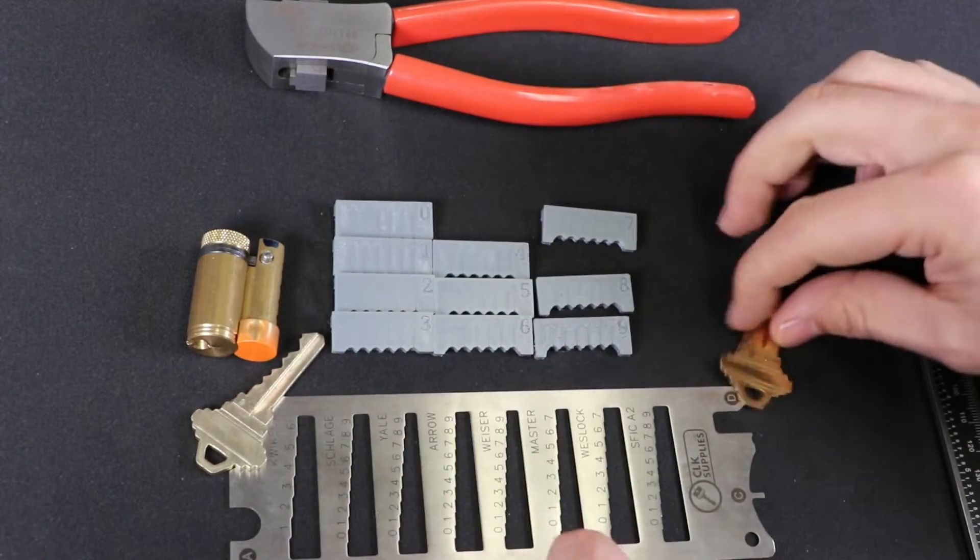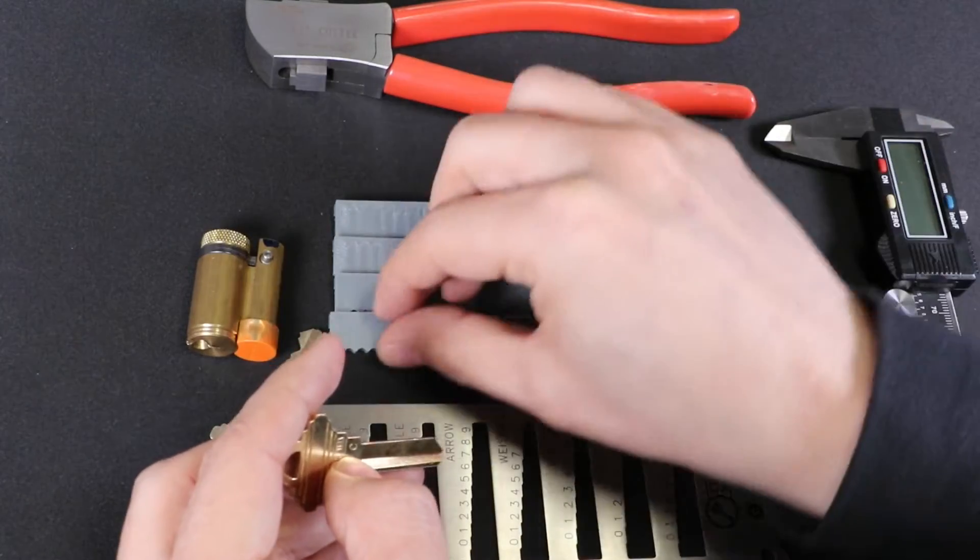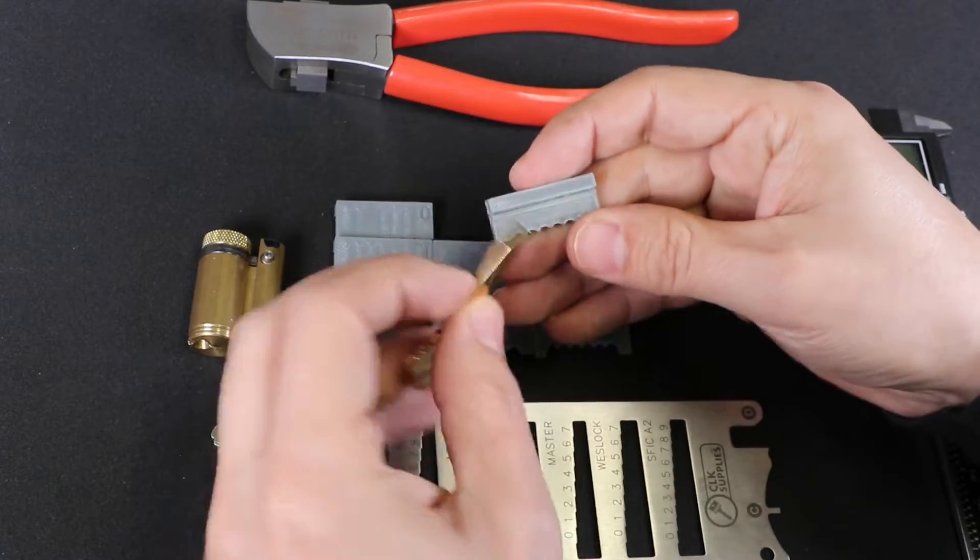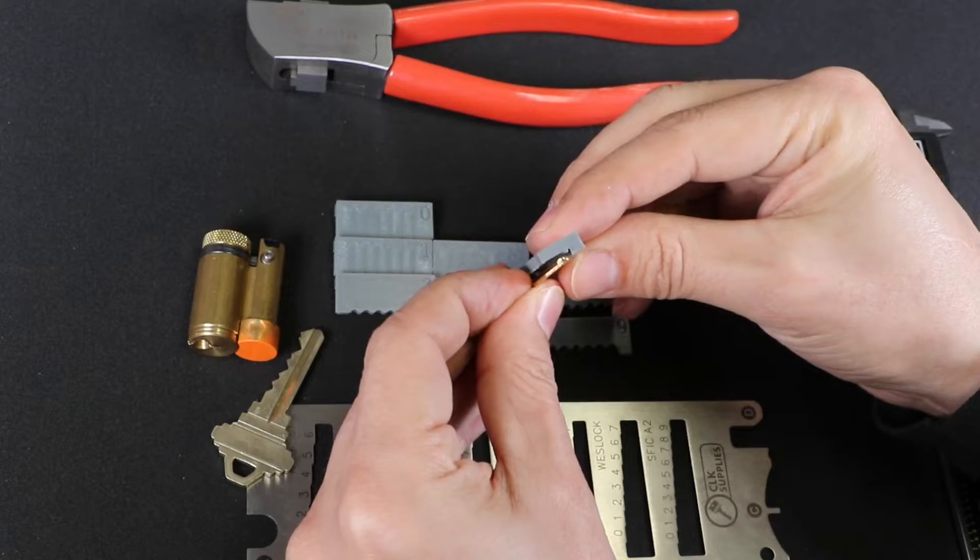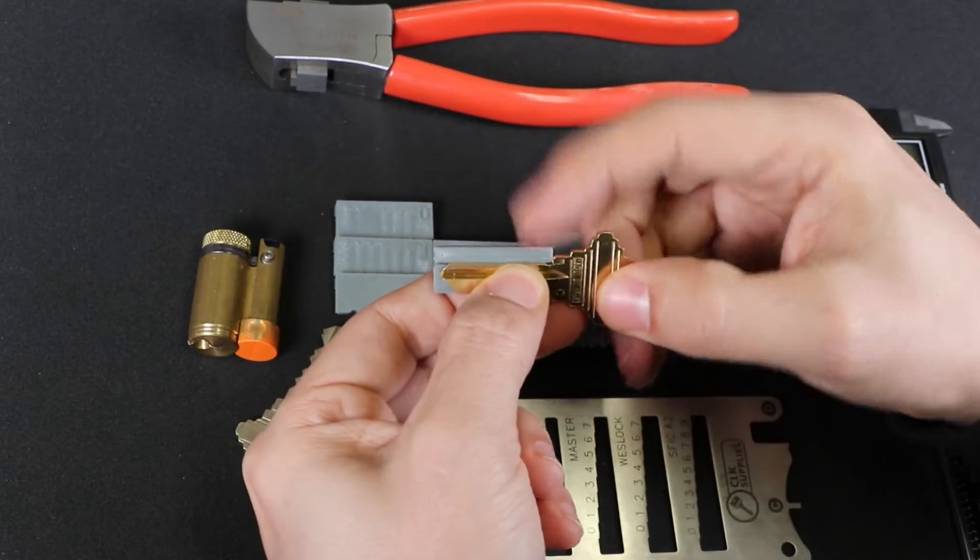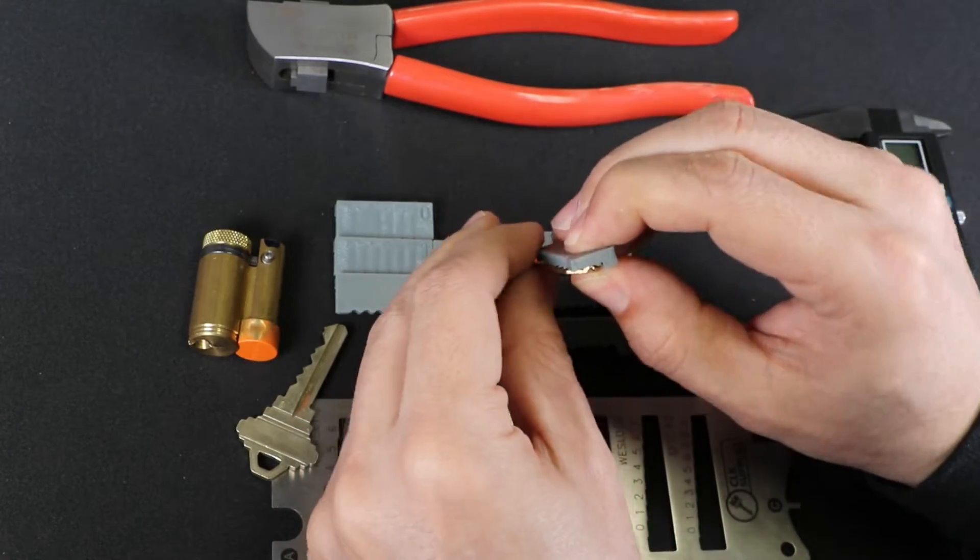So from what I can tell, let's say that I wanted to cut that first number three. I would take this number three. And it's got a ridge here that fits into the warding on the side of the key here. So if you put that in like that, and then you push it all the way to the shoulder here.